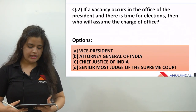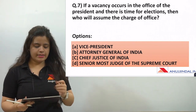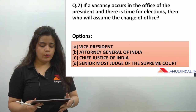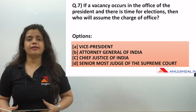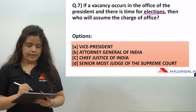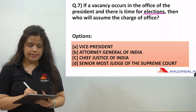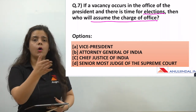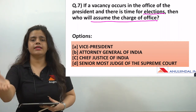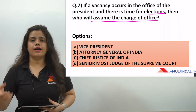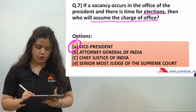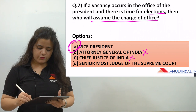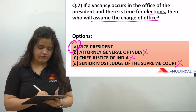The second question is: if a vacancy occurs in the office of the President and there is no time for elections, who will assume the charge of office? If the President's seat is empty and elections are also happening, who will take charge? The answer is the Vice President. The Attorney General of India cannot be the chief minister, and the senior-most judge of the Supreme Court cannot be the Vice President.